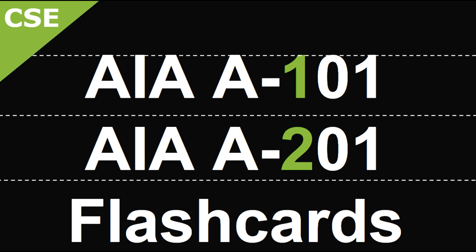What is the A201 contract? The general conditions of the contract for construction. What are the sections in the A201? The A201 is made up of: general provisions, owner, contractor, architect, subcontractor, construction by owner or separate subcontractor, changes in work, time, payments and completion, protection of persons and property, insurance and bonds, uncovering or correction of work, termination, and claims and disputes.